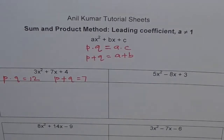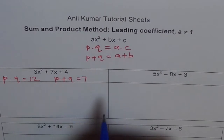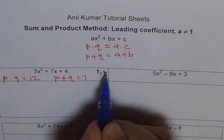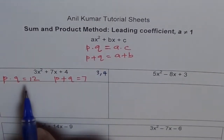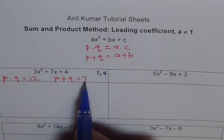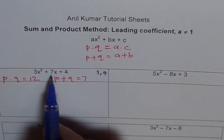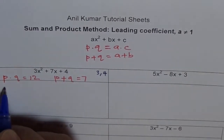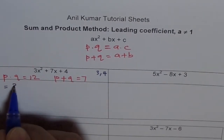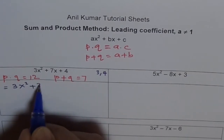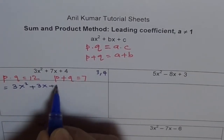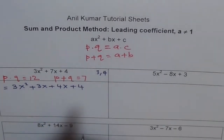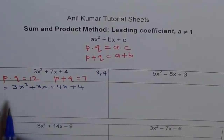What could be those two numbers? p and q could be 3 and 4. Yes, it works. So we will use 3 and 4. When you multiply 3 and 4 you get 12, and when you add them you get 7. So I'll decompose 7 with 3 plus 4, and write this trinomial as 3x squared plus 3x plus 4x plus 4. Now we got four terms.